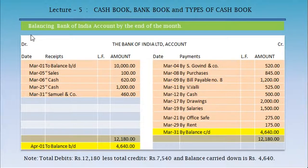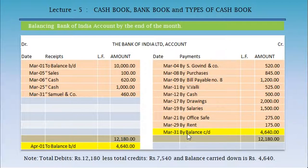Once we have recorded all the transactions, we have to balance each account — Bank of India account — by the end of the month. We total up the debit side: it comes to Rs. 12,180. On the credit side it comes to Rs. 7,540, and the balance carried down is Rs. 4,640. On March 31 we record on the credit side: by balance carried down Rs. 4,640, and on April 1, to balance brought down Rs. 4,640.